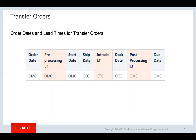In this slide, different order dates and calendars used are shown for transfer orders. For example, the ship date is calculated by subtracting in-transit lead time from the suggested dock date. In-transit lead time calculation is based on the carrier transit calendar; if it is null, the plan will use a 24x7 calendar.